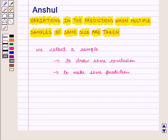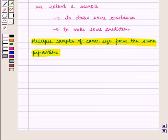Till now we have seen it with one sample but what happens when we take multiple samples of same size from the same population? Then we see that the predictions from the two samples can vary.